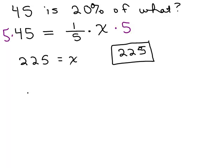What if you wanted to do this with decimals? You'd write 45 equals, how do you write 20 percent as a decimal? It's 20 divided by 100, so you move the decimal 2 to the left, 0.2x, and then you would divide both sides by 0.2.